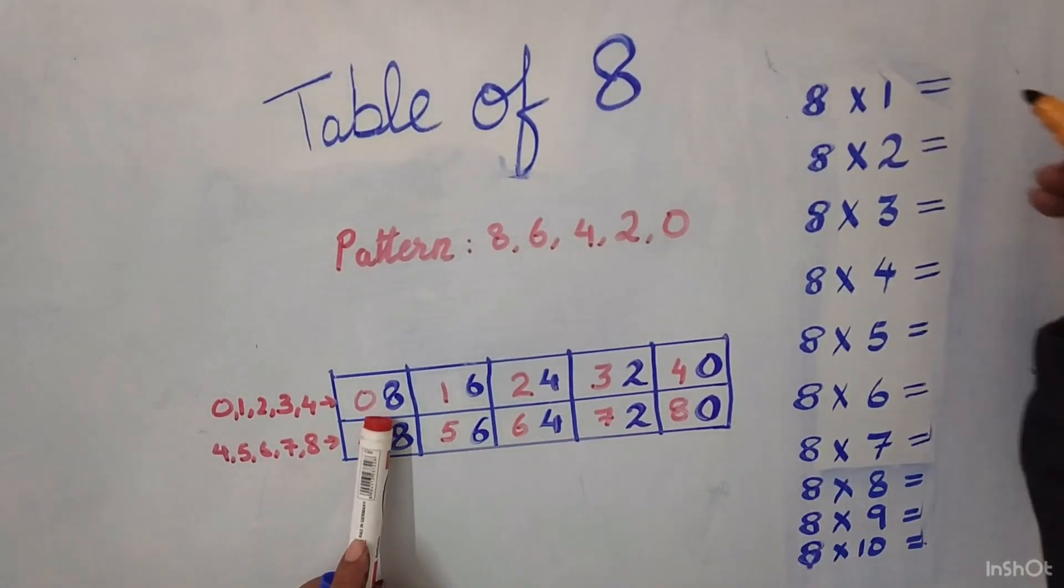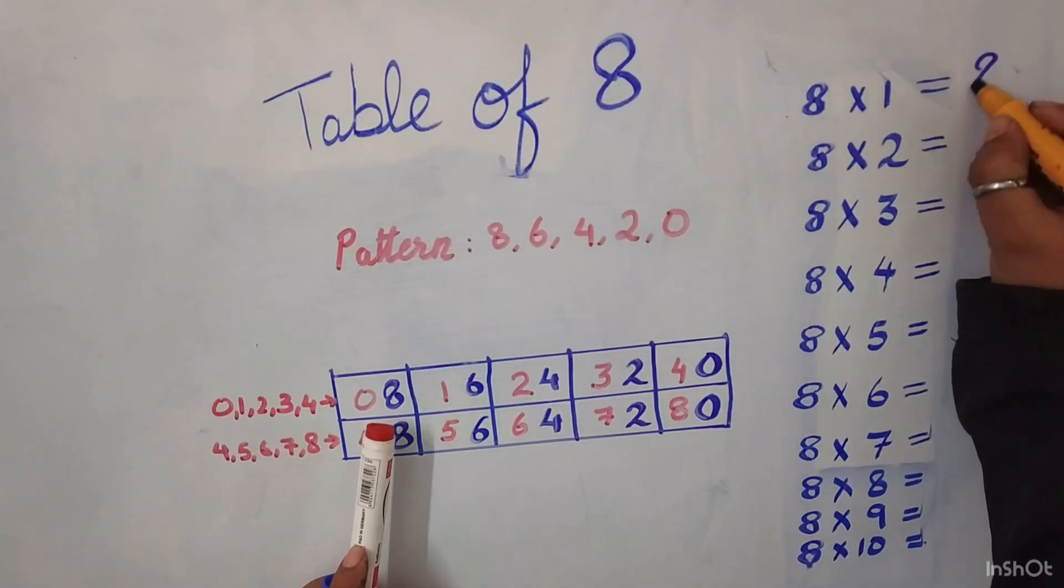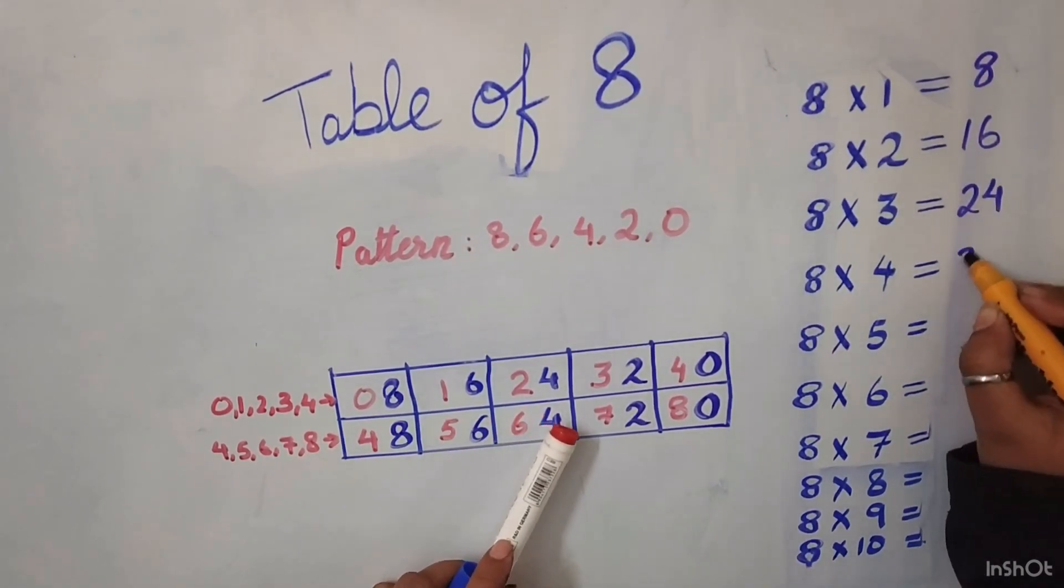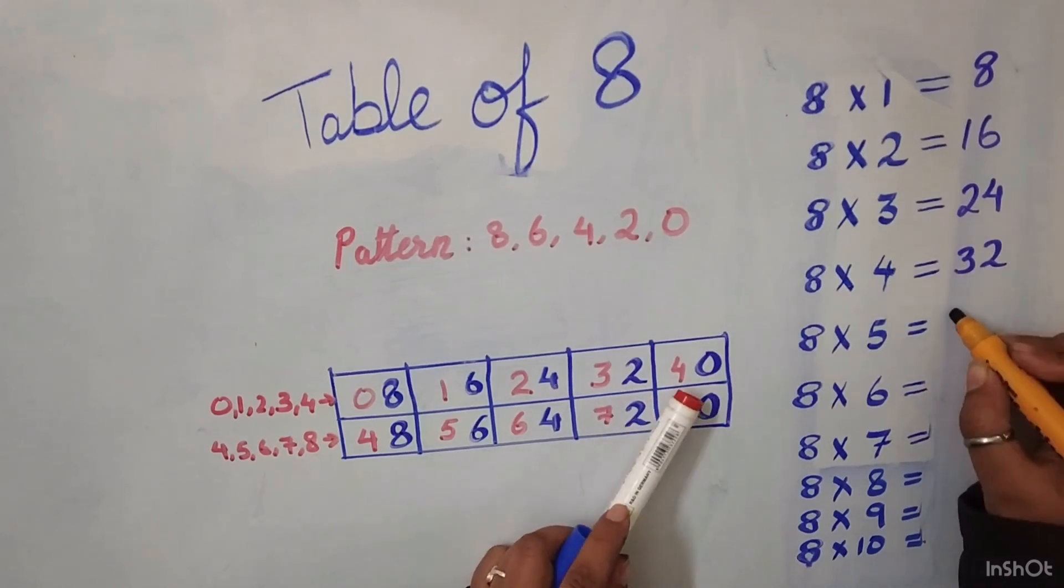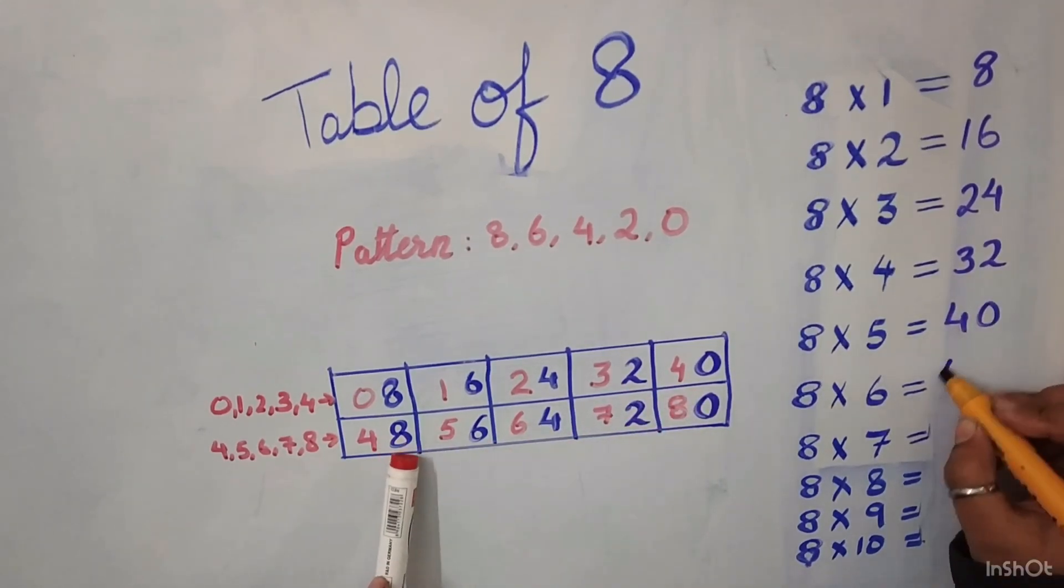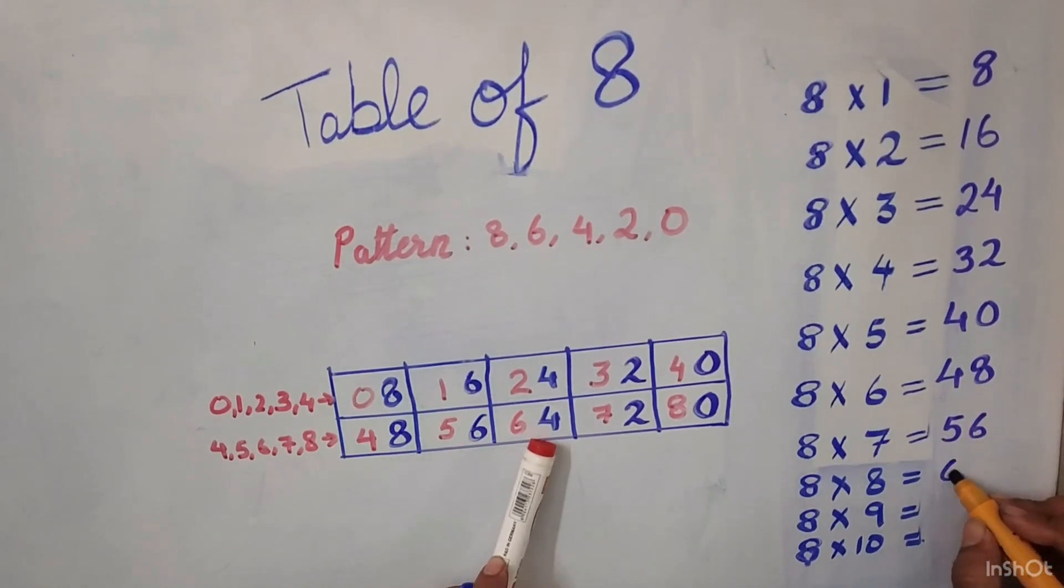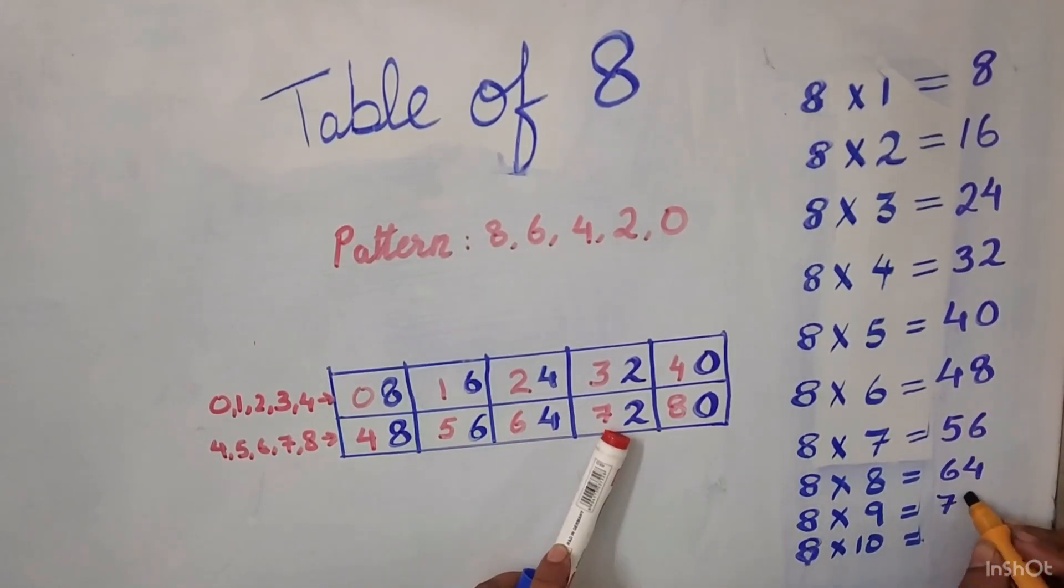Our table of 8 is ready. 8 1's are 8, 8 2's are 16, 8 3's are 24, 8 4's are 32, 8 5's are 40, 8 6's are 48, 8 7's are 56, 8 8's are 64, 8 9's are 72 and 8 10's are 80.